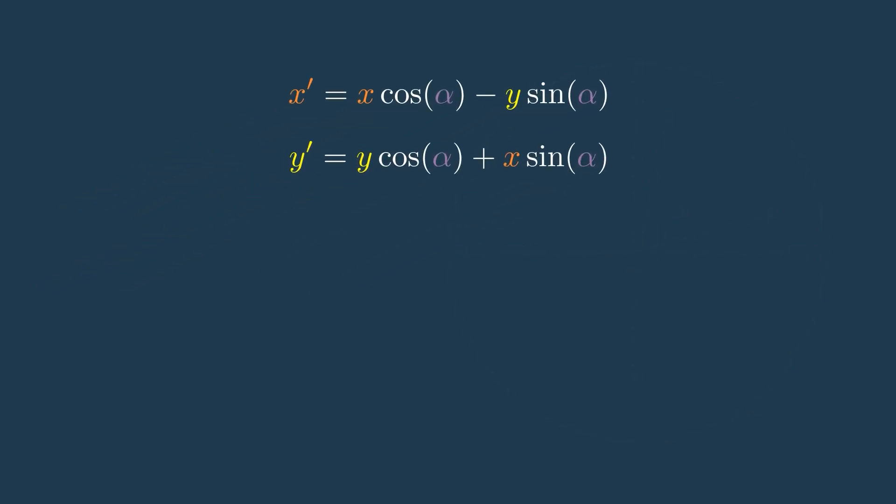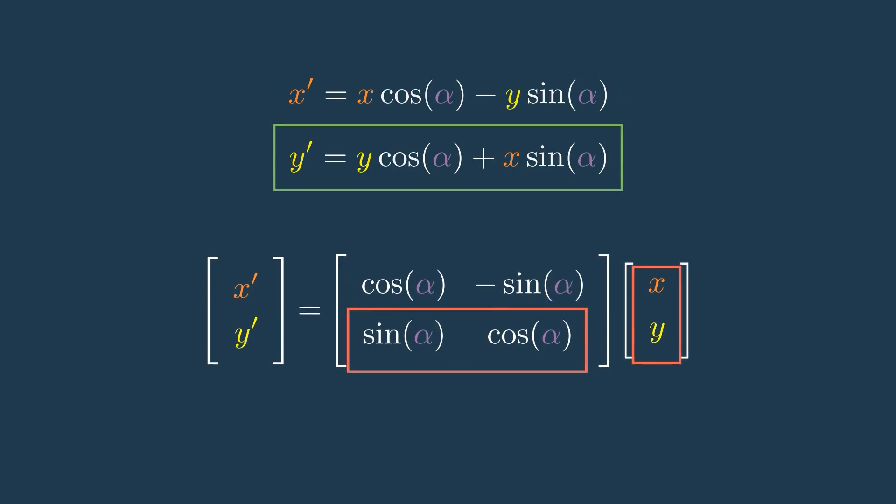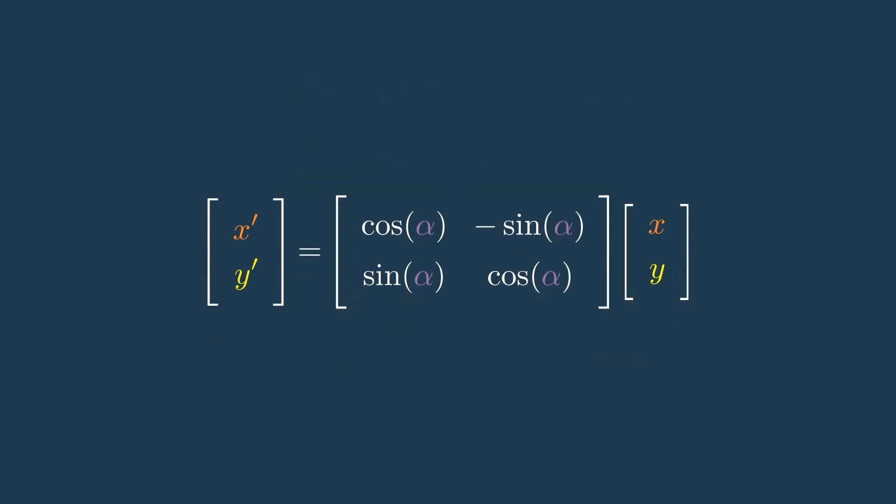Since we have a linear system of equations here, where x and y are multiplied by constants, and then added together to create x prime and y prime, what we can do is move this equation into an expression of matrix vector multiplication. Using a matrix here is really useful for expressing our rotation formula, since it lets us describe it with only one equation. The way you multiply matrices with vectors is by taking the dot product of the row of the matrix with the column of the vector. In this case we get x prime equals x times cosine alpha minus y sine alpha, and y prime equals x sine alpha plus y cosine alpha. In the end, using a matrix is representing the same thing as our equations, it just makes it more concise and easy to work with.